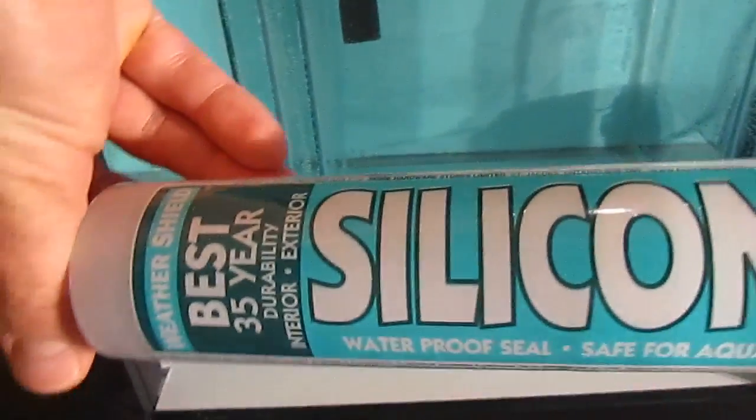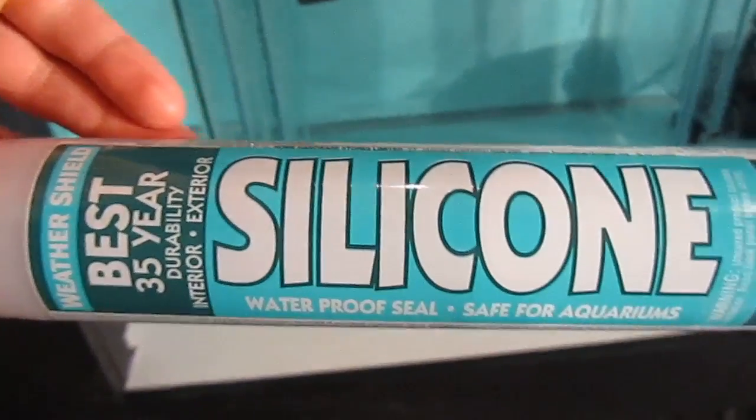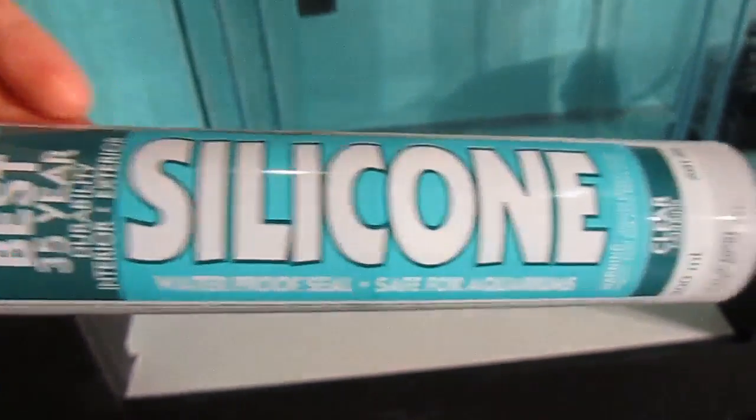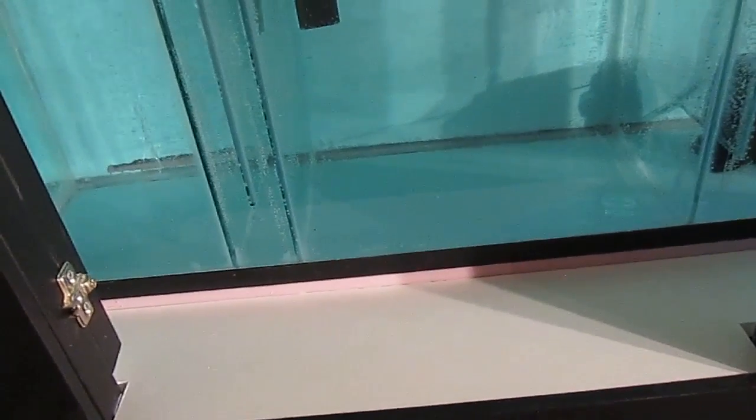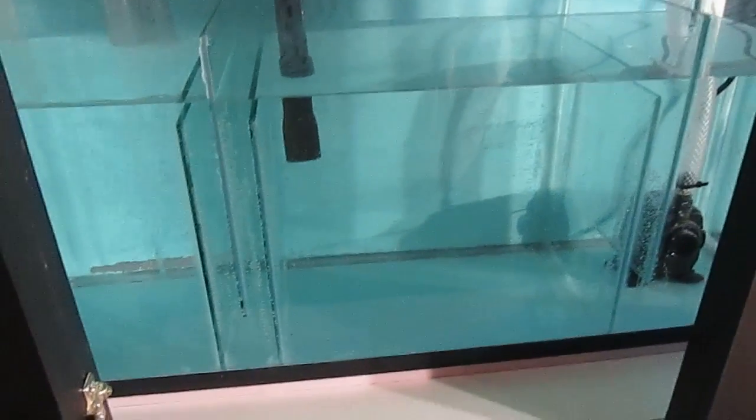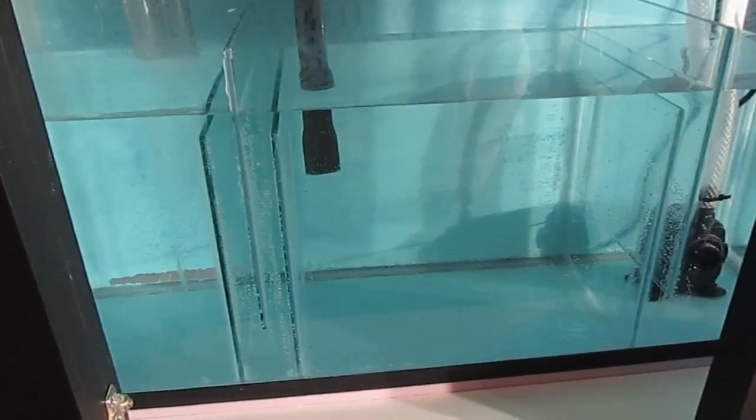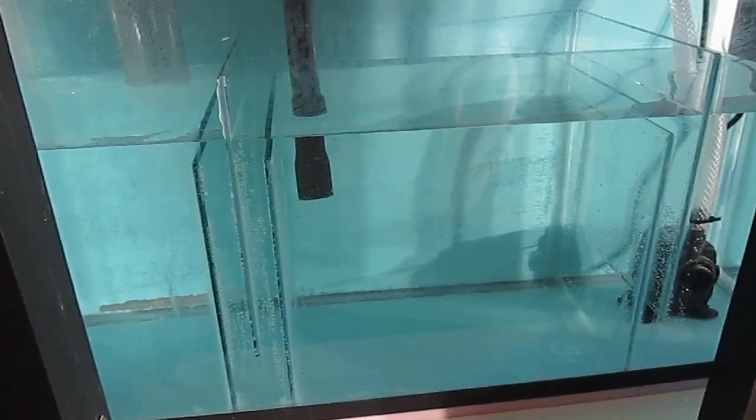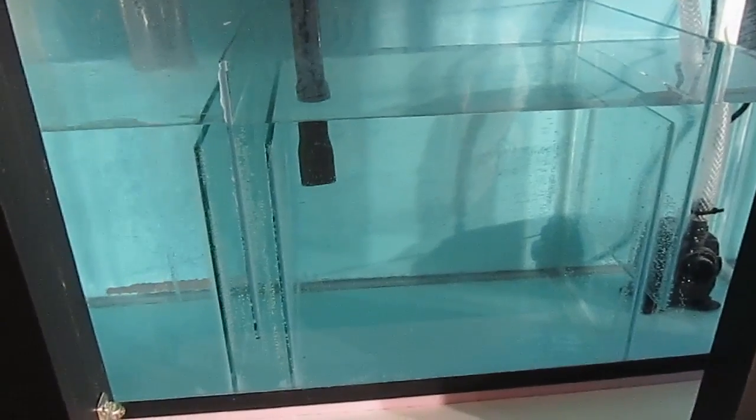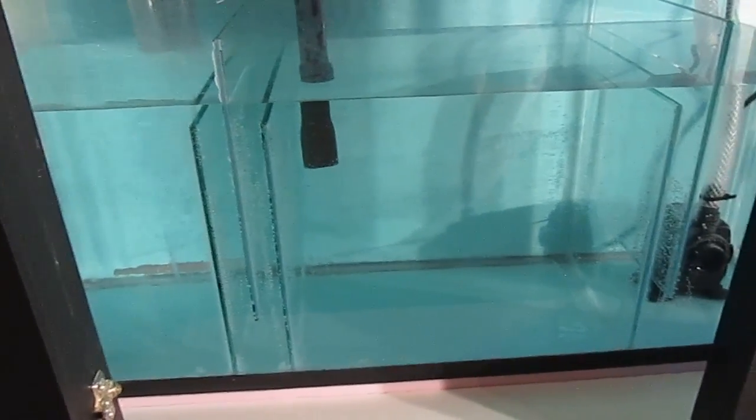That way you can use an aquarium safe silicone. I've got a tube here. So it says right on here, aquarium safe. This stuff works really well for bonding glass against glass. Of course, that's how your aquarium is built in the first place in the edges. A super strong bond. So I'm quite happy with how that turned out and very glad I ended up going with a glass to glass bond.